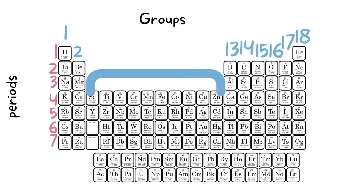Now there is an adjustment we need to make in the groups. Instead of numbers 13, 14, 15, 16, 17, and 18, we are actually going to turn these into 3, 4, 5, 6, 7, and 8. This is because the maximum number of electrons in the valence shell can only be up to 8, not 18.